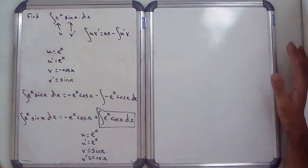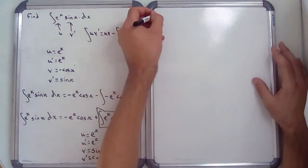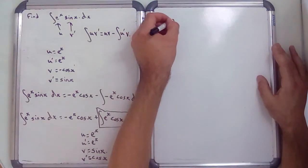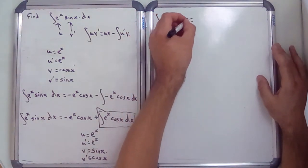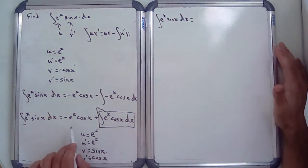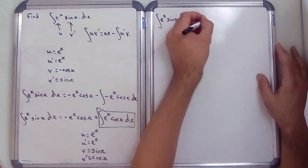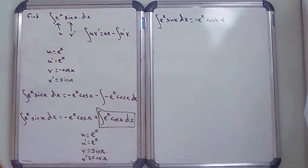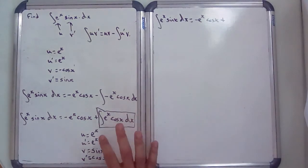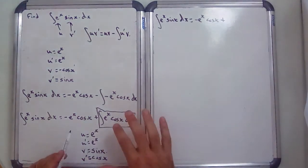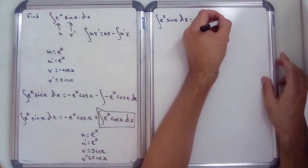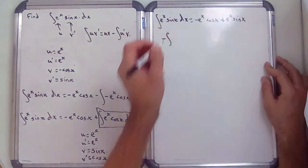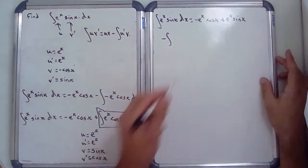Now I'm going to write the whole thing out so I don't lose anything. The integral of e^x sin(x) dx equals −e^x cos(x) plus the result of the second integration by parts, which gives u·v minus the integral of u'·v: so plus e^x sin(x) minus the integral of e^x sin(x) dx.